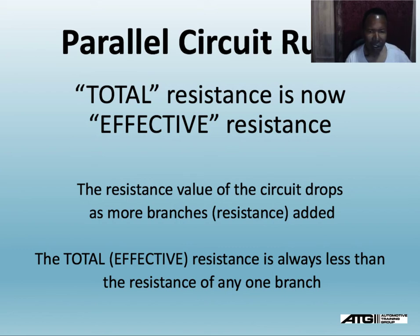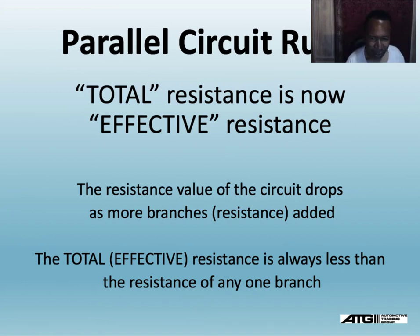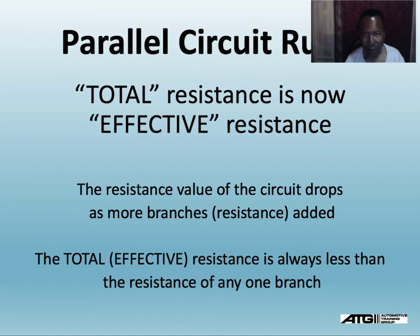The total resistance — now called effective resistance — the resistance value of the circuit drops as more branches are added. If I have two loads in parallel and I add a third one, my total resistance goes down and my amperage goes up. Every time I add a leg to the circuit, my resistance goes down and my current goes up.